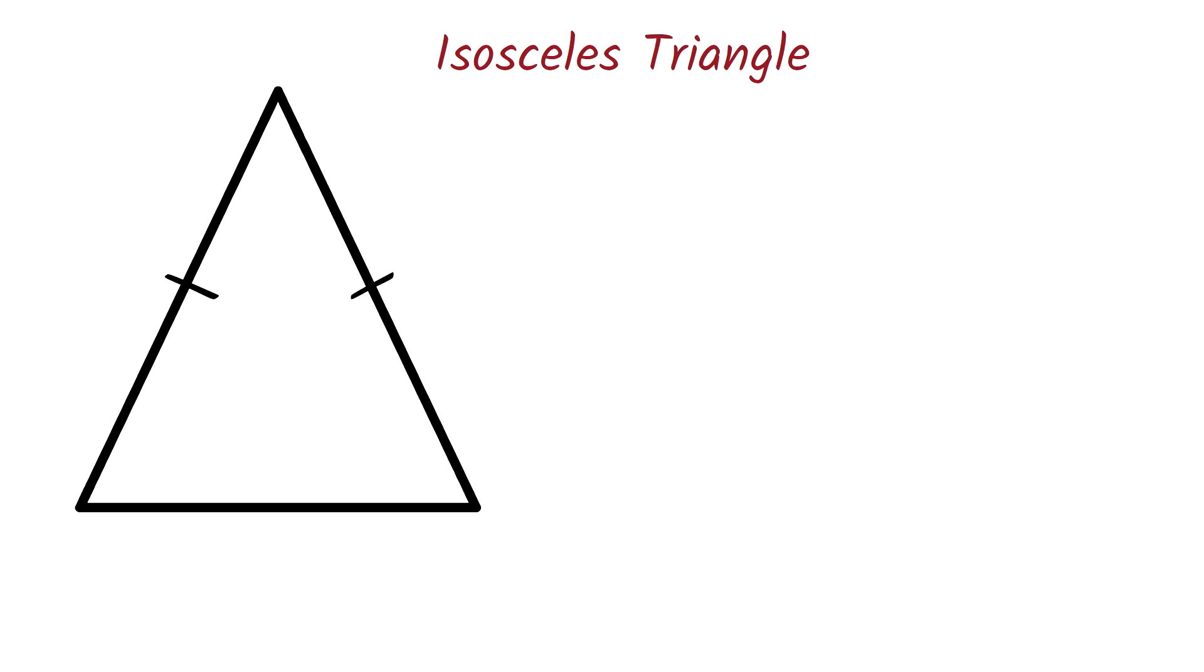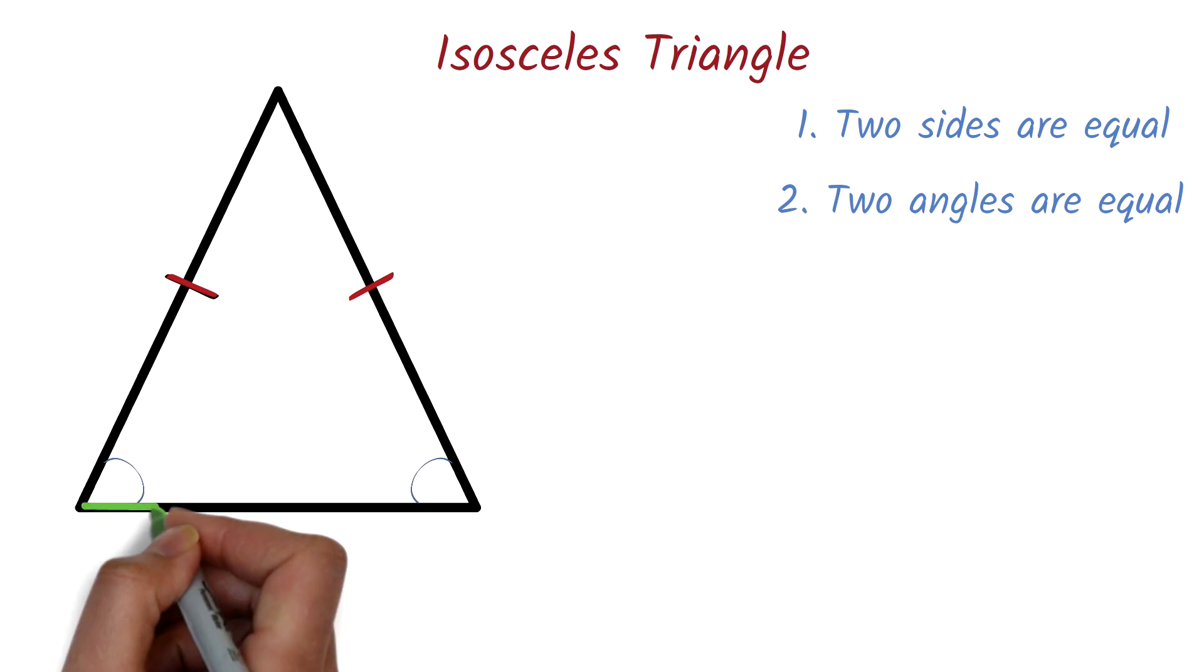This figure here is an isosceles triangle. Two sides are equal. Notice that we used single bar to represent the equal sides. Two angles are equal. Here, these two angles are equal. The equal angles are always where the two equal sides meet the third side. Or we can say that the equal angles are always at the ends of this other line.